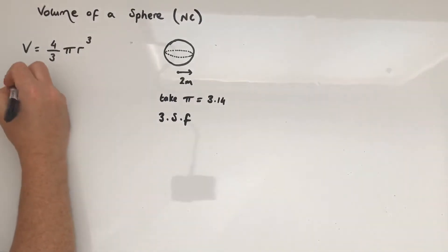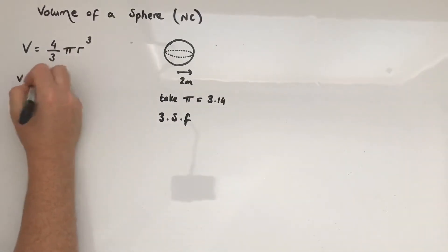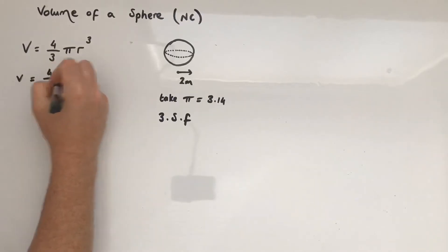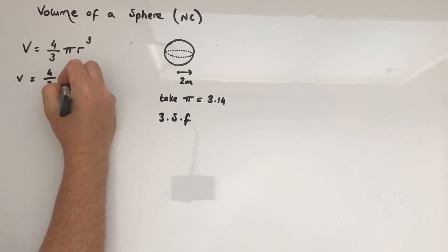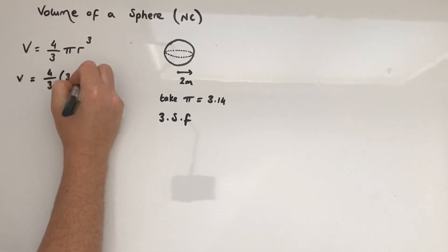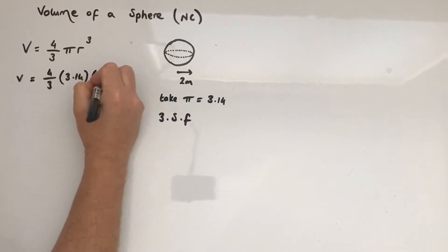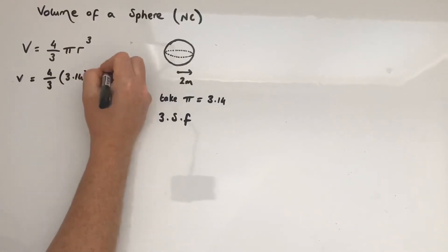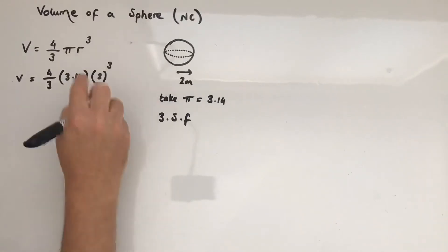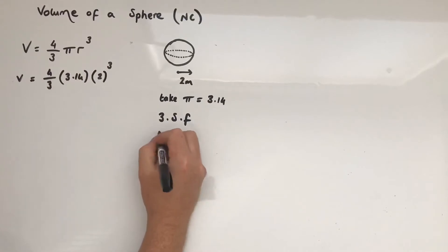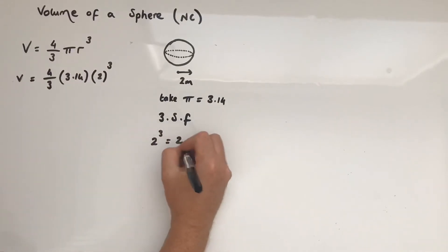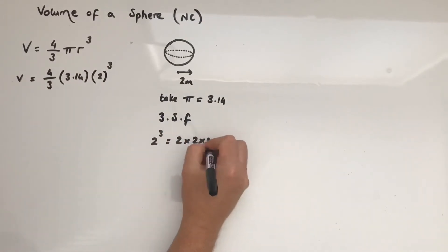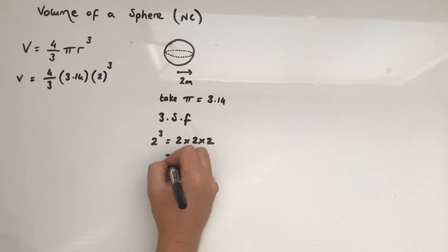We're going to get our mark for substitution. I'm going to use the brackets here, and 2 cubed — so 2 cubed is 2 multiplying by itself three times. Please take your time with that.